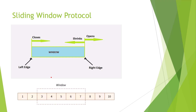This is called the sliding window protocol — it keeps moving, sliding from left to right. The window has a left edge and a right edge. Data to the left of the left edge has been sent and the acknowledgement has already been received. ACK is always the next expected byte — so if byte 2 is sent, ACK says send me byte 3.